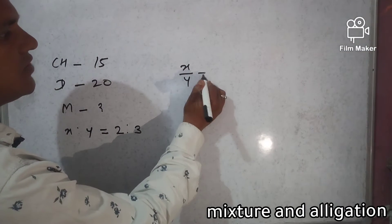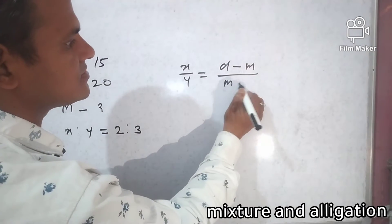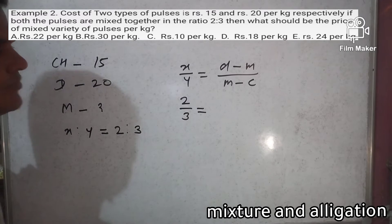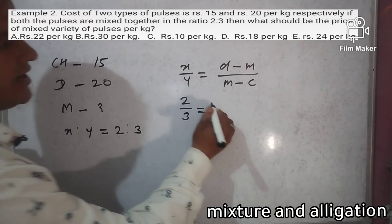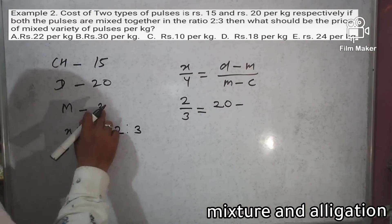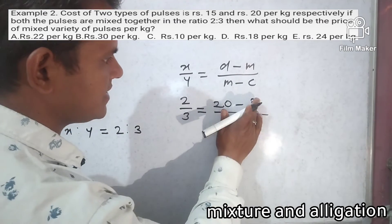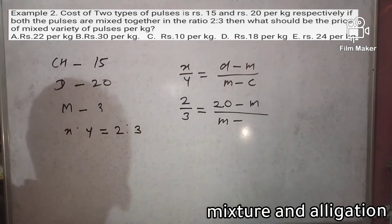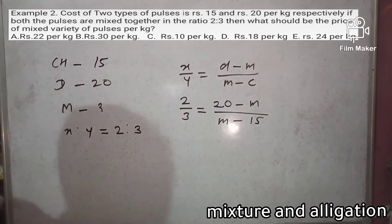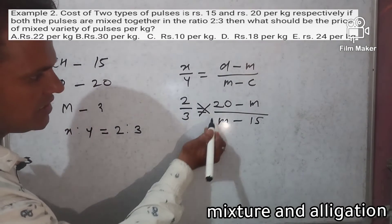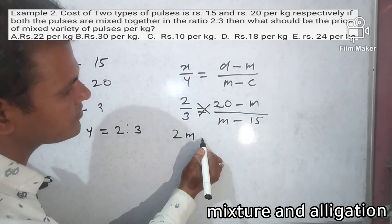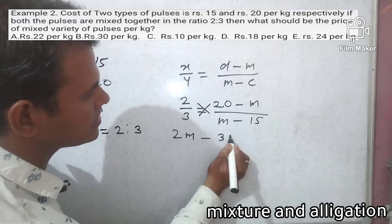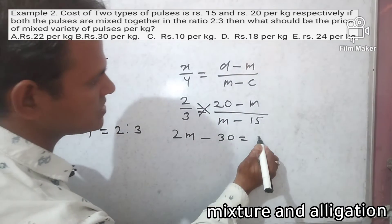So x by y equals (dearer minus mix) by (mix minus cheaper). Here x by y is given as 2 by 3. So 2 by 3 equals (20 minus m) by (m minus 15). We cross multiply: 2 into (m minus 15) equals 3 into (20 minus m). That gives 2m minus 30 equals 60 minus 3m.